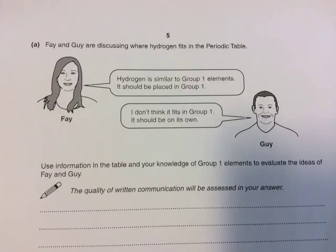Finally, you need to evaluate the view that hydrogen doesn't fit into Group 1 — in other words, how is it different to Group 1? Hydrogen is a gas, whereas Group 1 are all solid metals. Hydrogen is a non-metal. It doesn't react with water, unlike Group 1. It forms compounds with metals as well as non-metals. It has a maximum outer shell of two electrons, whereas most Group 1 elements have a maximum of eight electrons in their outer shell. It may gain an electron to form a 1 minus ion, as well as forming a 1 plus ion.